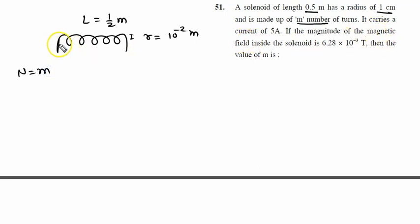It carries a current of 5 ampere. If the magnitude of the magnetic field inside the solenoid is 6.28 into 10 raised to power minus 3 tesla.